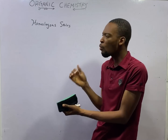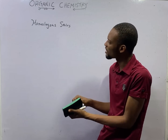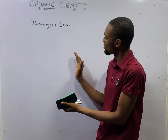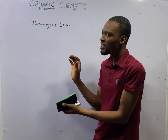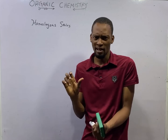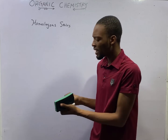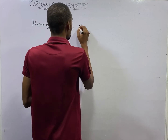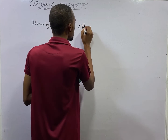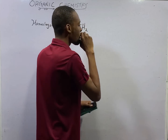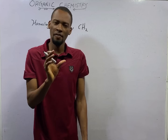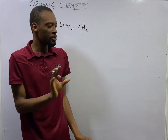One of the characteristics of homologous series is that each member differs from others by a CH₂ group.